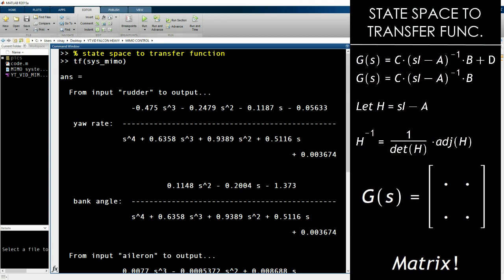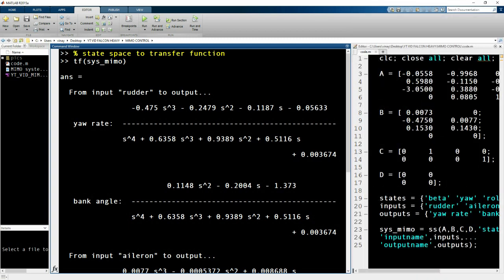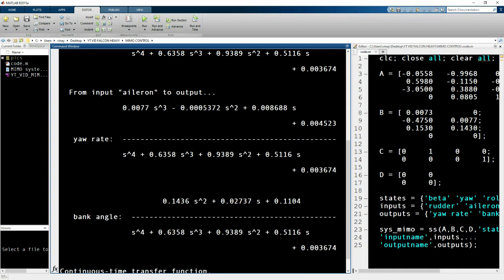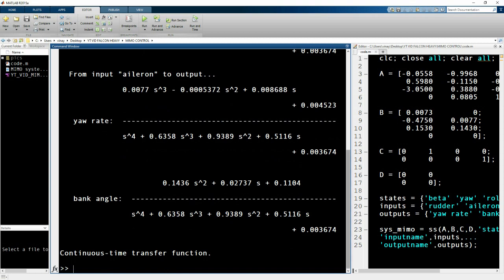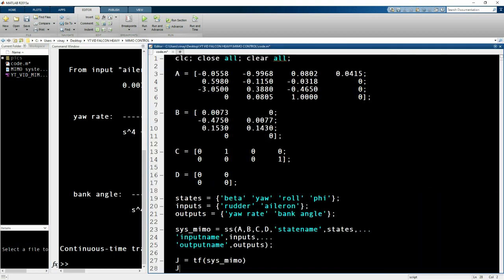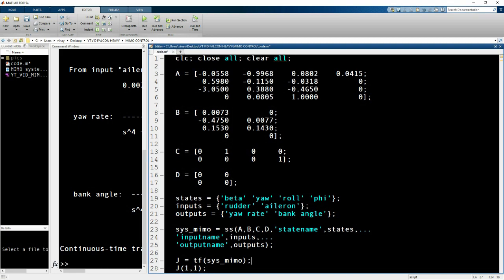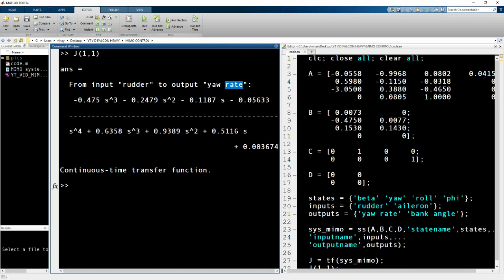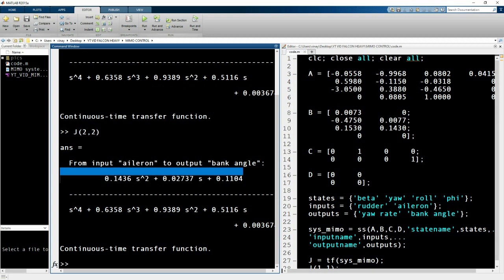Because you have two outputs and two inputs, this is an underlying concept of multivariable control where you can use either controller A or B to adjust any of the outputs you want. The transfer functions will end up in a matrix. Here I just selected J(1,1), so that's rudder to yaw rate. Similarly, if I do J(2,2), I will get aileron to bank angle, and I can do the same for the others.